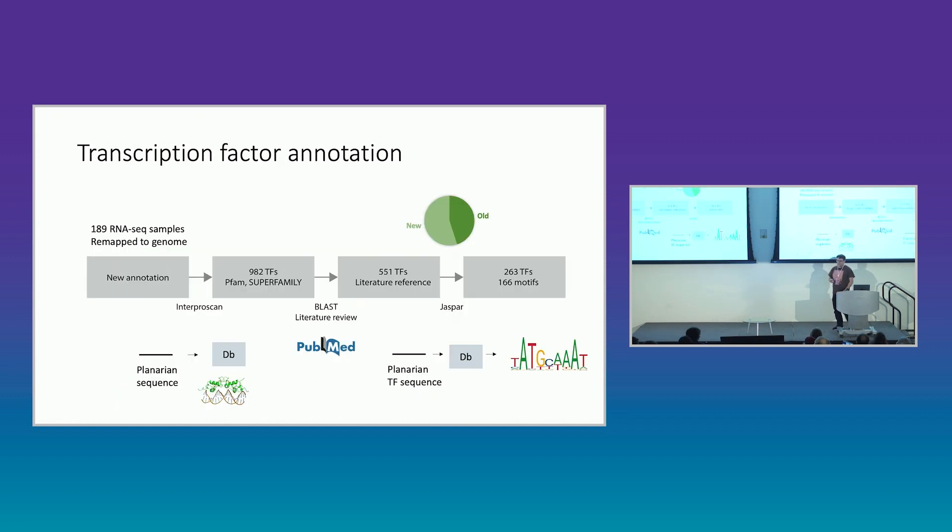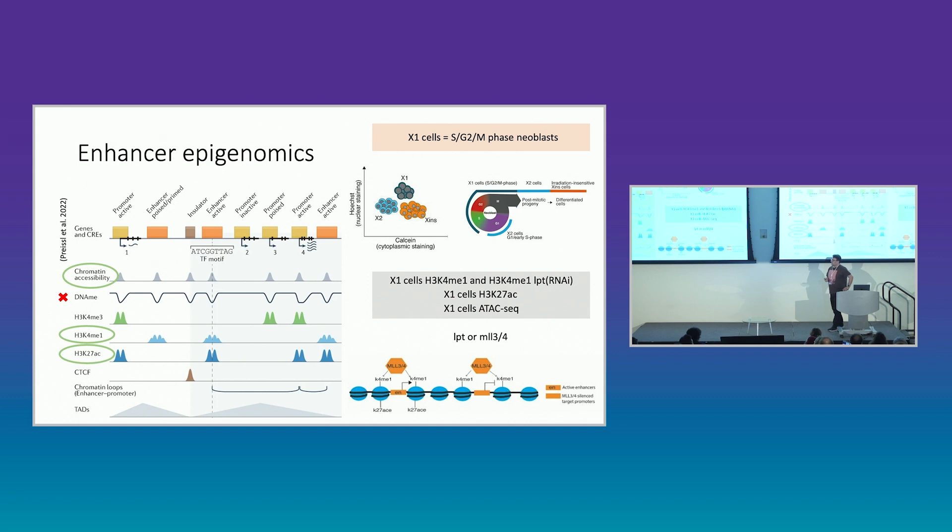So the first thing he did was to make sure we knew what all the transcription factors were in this animal because we didn't really have a precise annotation. In fact, it was worse than we realized because when we went back and we did this, we almost doubled the number of annotated transcription factors, mainly by finding more paralogues than we realized there were going to be. And then because we don't have lots of technology to identify motifs in the animal itself, we used databases to predict motifs that these transcription factors and these transcription factor families are likely to bind.